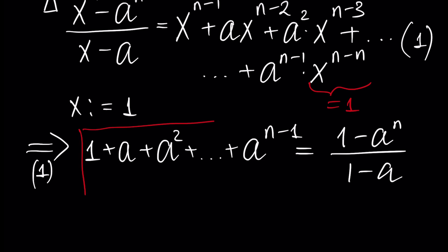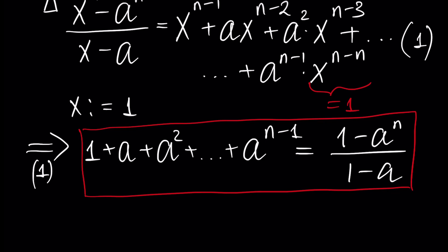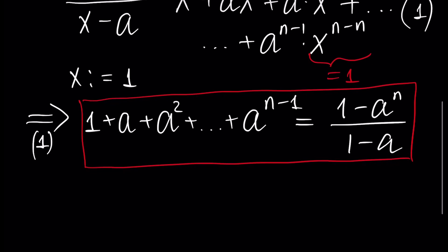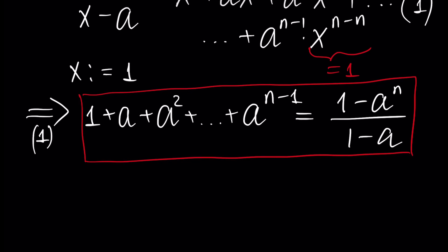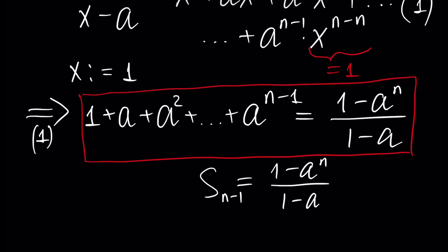This is the formula for the sum of the first n elements of a geometric progression. In other words, another representation of how we write this formula is: Sn minus 1 is equal to a minus a to the power n, divided by 1 minus a.